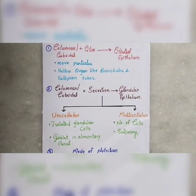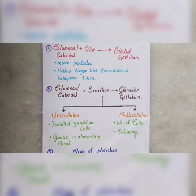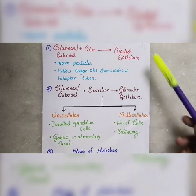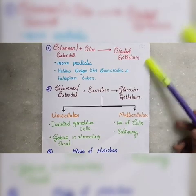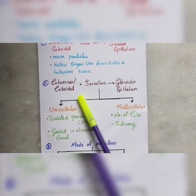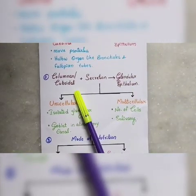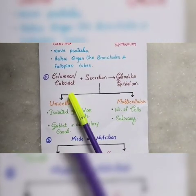There is also a cilia structure — a hair-like structure. These structures can remove particles and bacteria. They can also remove molecules and move the ovum in the fallopian tube. Cilia are present on columnar and cuboidal epithelium.